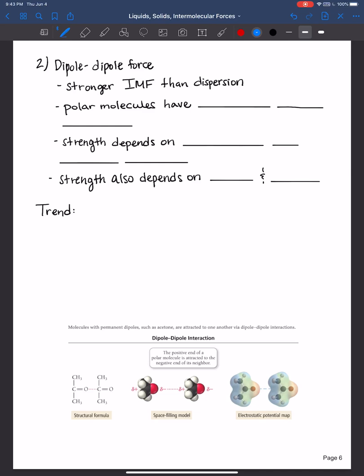Polar molecules have a permanent dipole moment. And the strength depends on the magnitude of that dipole moment. And the strength also depends on the size and shape of the molecule.